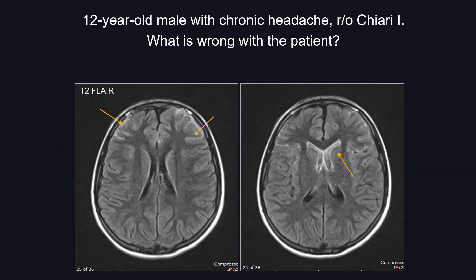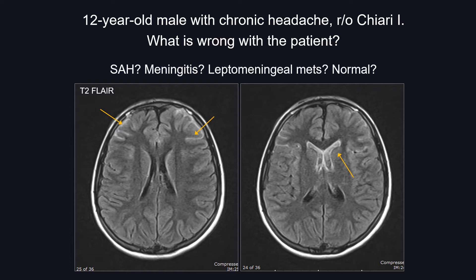Let's start with a case. Here you have a 12-year-old male with chronic headache and Chiari 1 malformation. These are T2 axial FLAIR images. When you see abnormal FLAIR signal in the sulci or in the CSF spaces, your top three differential diagnoses should be blood, pus, or cells — so subarachnoid hemorrhage, meningitis, or leptomeningeal carcinomatosis. Increased oxygenation content can also produce incomplete CSF FLAIR suppression. We will come back to this case at the end of the lecture.